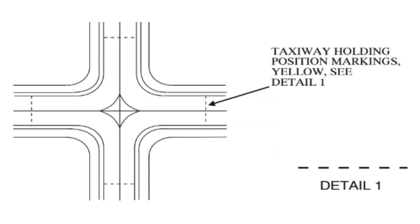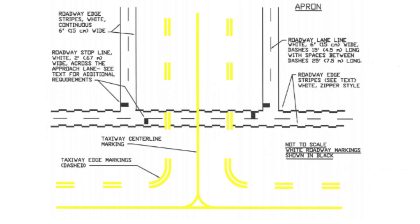The dashed lines on a taxiway indicate a taxiway holding marker and the solid lines on the outside of the taxiway define the edge of the usable taxiway. The dashed lines on a taxiway are an indication that the adjacent taxiway is available. The taxiway centerline marking is a solid yellow line as illustrated.